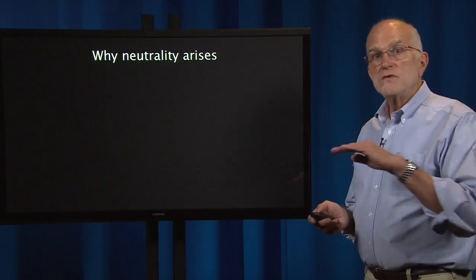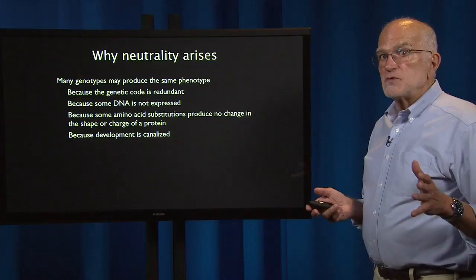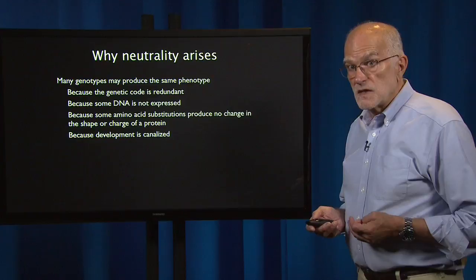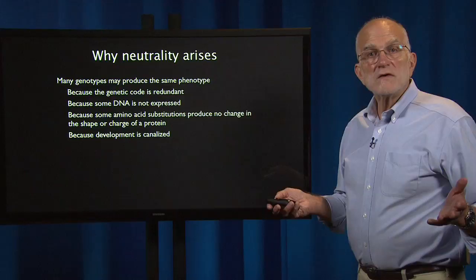There are two general reasons for neutrality. One is that many genotypes may produce the same phenotype. That's because the genetic code is redundant, because some DNA is not expressed, because some amino acid substitutions produce no difference in the shape or function of a protein, and because development is canalized.